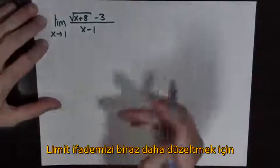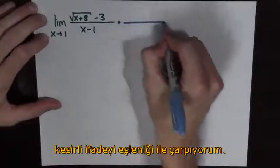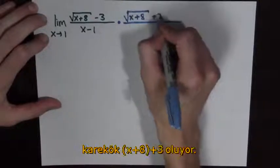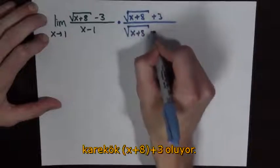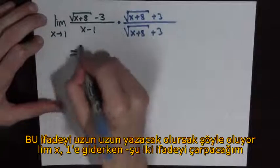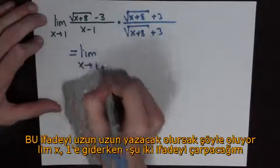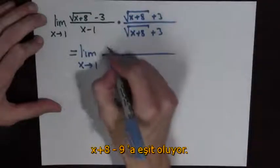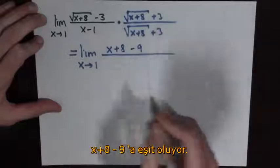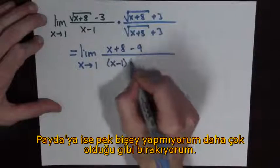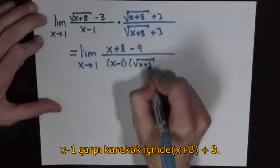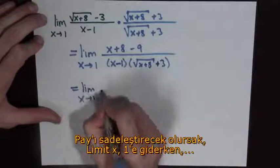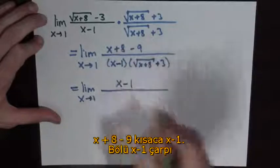So to compute this limit we're going to rationalize the numerator by multiplying by the conjugate: the square root of x plus 8 plus 3 all over the square root of x plus 8 plus 3. So now this is equal to the limit as x goes to 1 — we expand this out and we find it equals x plus 8 minus 9 in the numerator. In the denominator, just leave it as the square root of x plus 8 plus 3. Simplifying the numerator, x plus 8 minus 9 is just x minus 1.